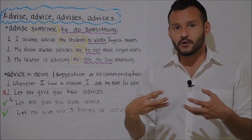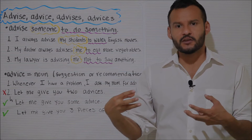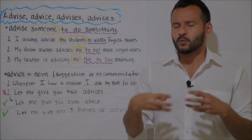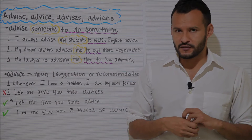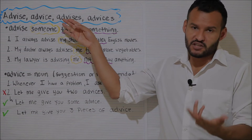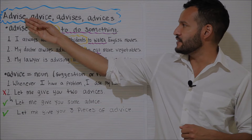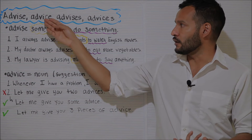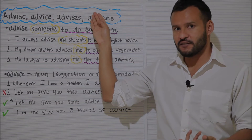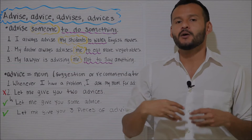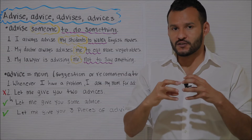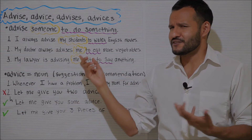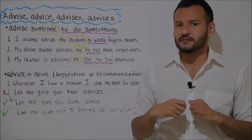Even though these two words are pronounced the same way and even though their definitions are a little bit related, we do use them in slightly different ways. You'll notice in my title that I have 'advise' and 'advises' with S before the E, and the word 'advice' and 'advices' with C. We're going to be taking a look at how to use each one of these forms, but spoiler alert — one of these words doesn't even exist.